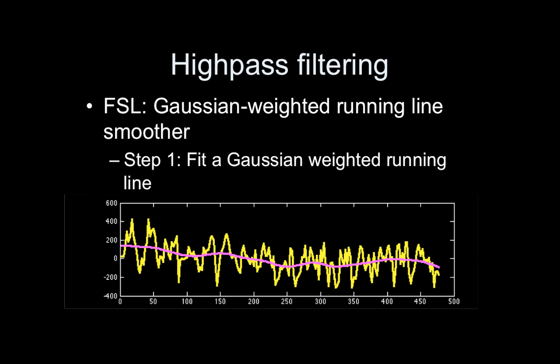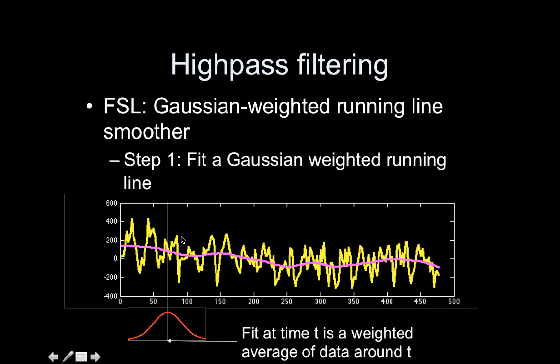FSL, on the other hand, doesn't add something to the model. They actually apply this filtering both to your design matrix regressors and the data. That's this Gaussian weighted running line smoother. The pink line I'm showing here is the actual Gaussian weighted running line. At each time point, you take a weighted average of the data — the yellow data — where the weights follow a Gaussian distribution. That's the Gaussian weighted part. You take that weighted average and it gives you the value on the pink line, then you scoot it down and do it at all the time points.